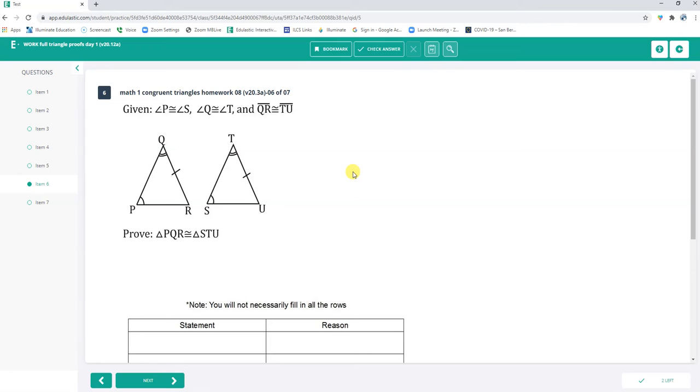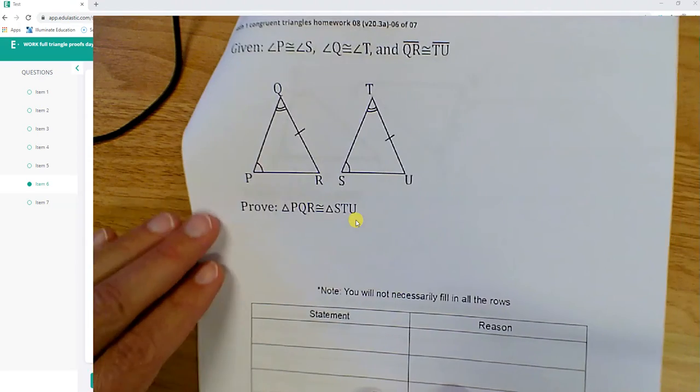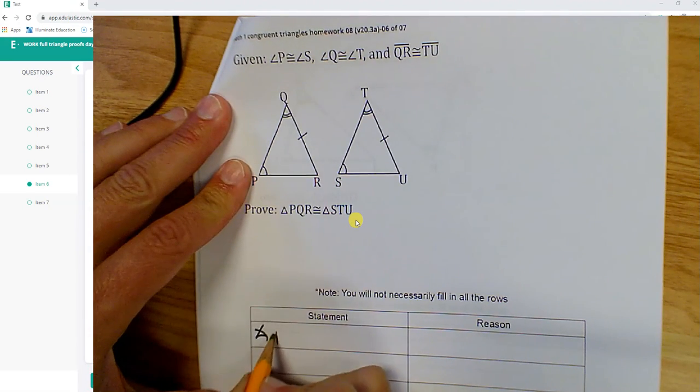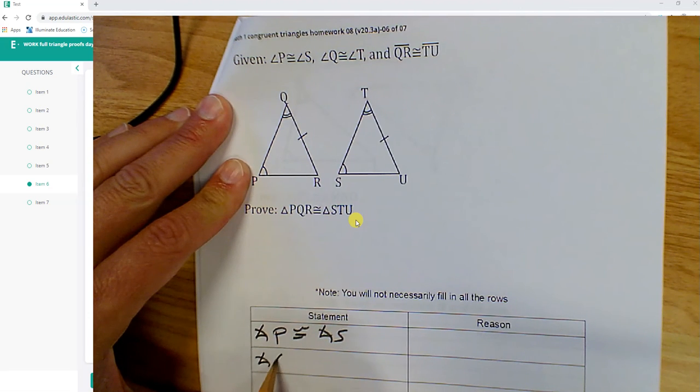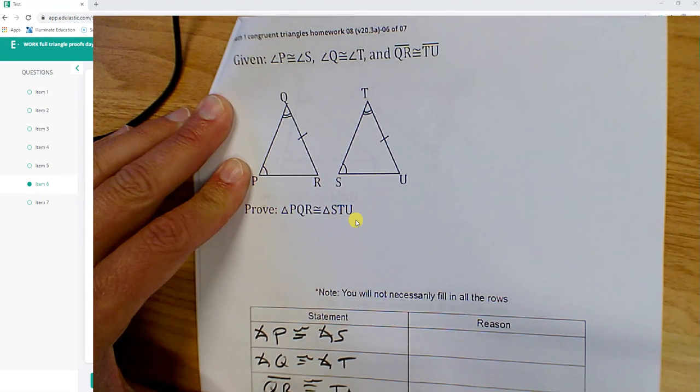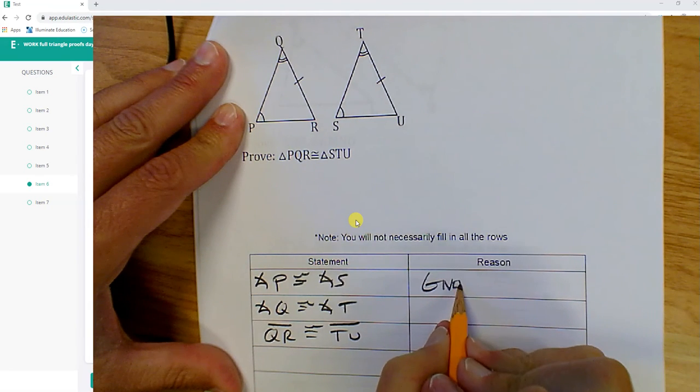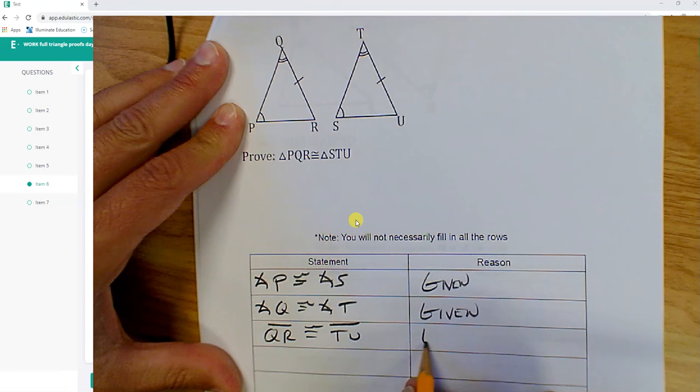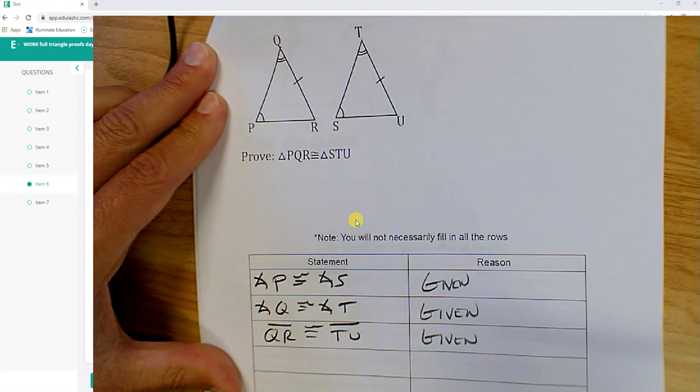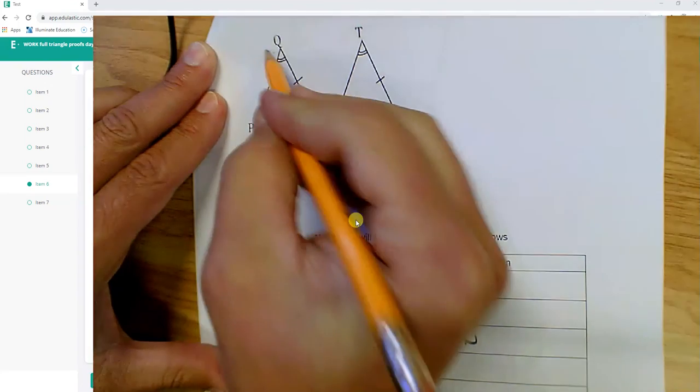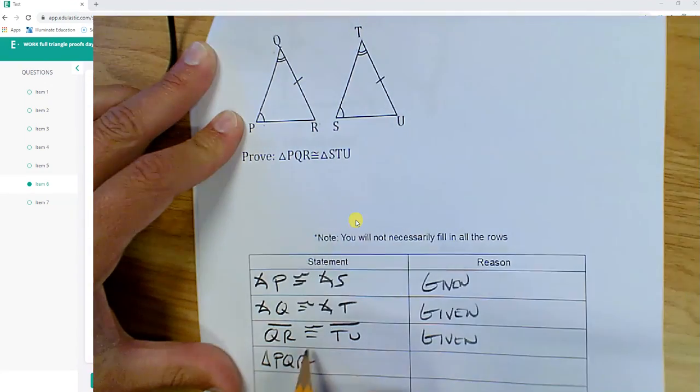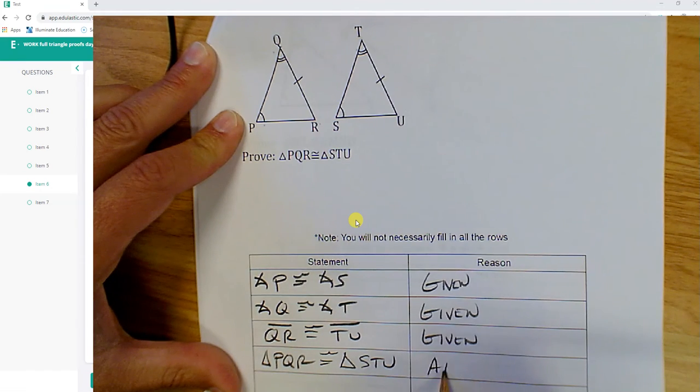Number six. Angle P is congruent to angle S. Angle Q is congruent to angle T. Segment QR is congruent to segment TU. Those are all givens. All right. And it looks like I've got the two triangles. Triangle PQR is congruent to STU by angle, angle, side.